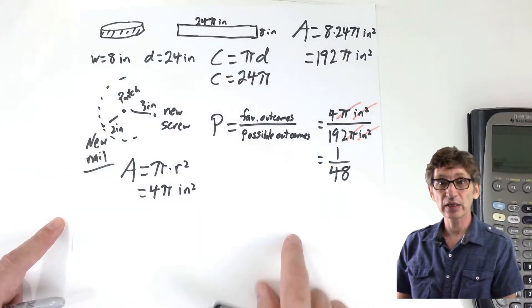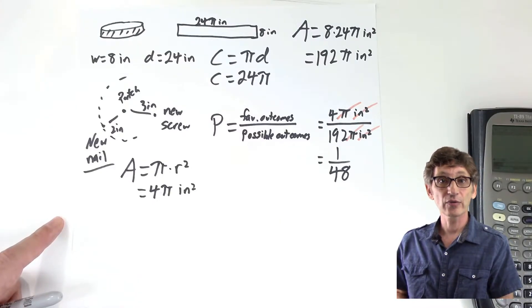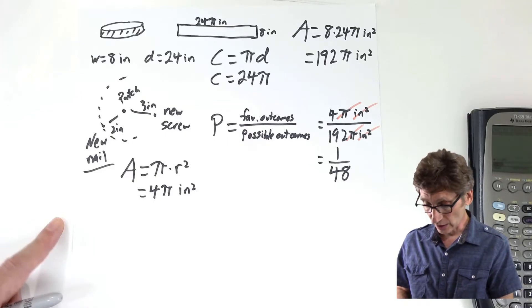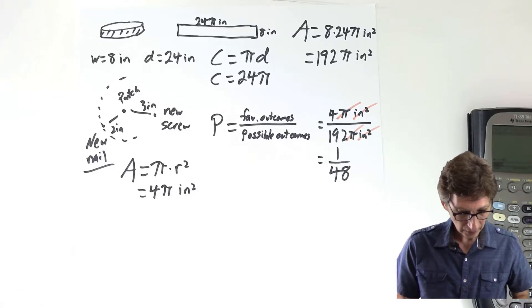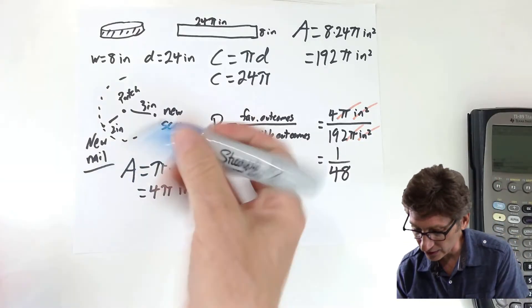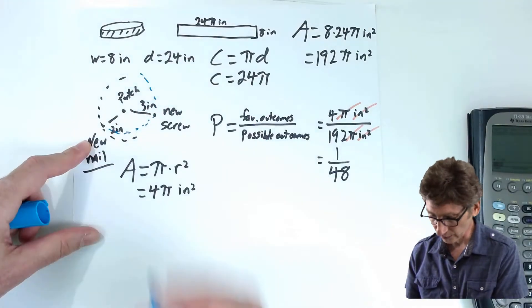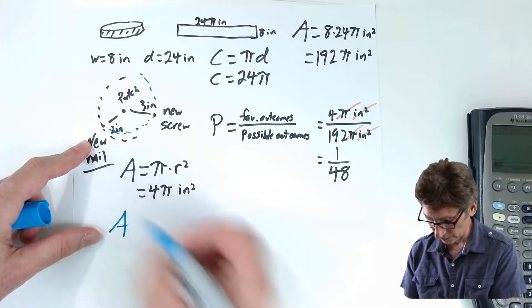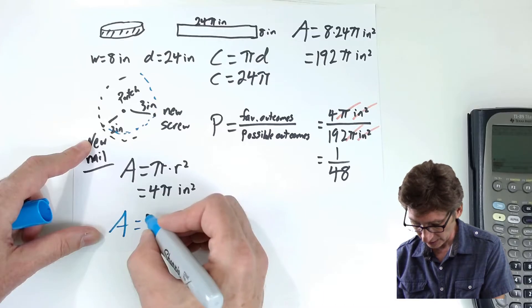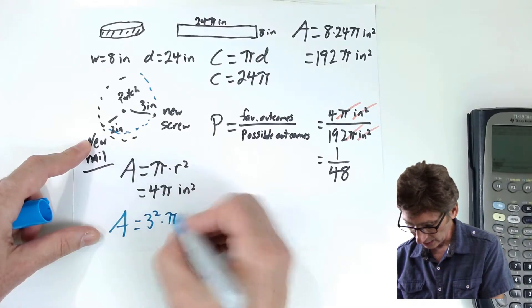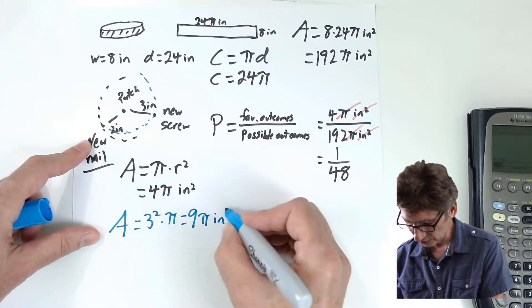So that's the probability of the nail being within two inches of the patch. What about the screw being within three inches of the patch? We're doing a very similar process. I'm going to be looking at this circle with a radius of three. So the area of the screw is, let's see, radius three squared times pi. So that would be nine pi inches squared.